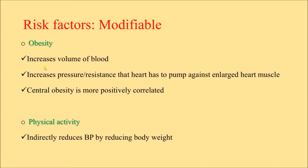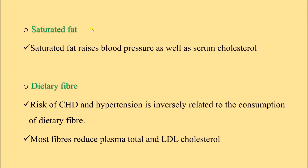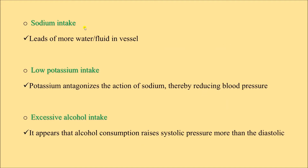Modifiable risk factors — number one is obesity, which increases blood volume and the pressure the heart has to pump against; central obesity is more positively correlated. Physical inactivity leads to obesity and then hypertension; physical activity indirectly reduces blood pressure by reducing body weight. Saturated fat raises blood pressure and serum cholesterol. Dietary fiber is inversely related to risk of coronary heart disease and hypertension — most fibers reduce plasma total and LDL cholesterol. Sodium intake leads to fluid retention, causing hypertension.